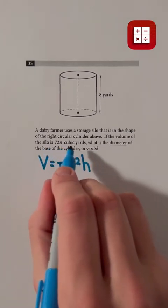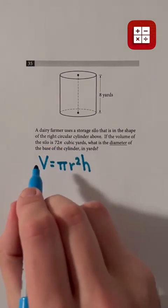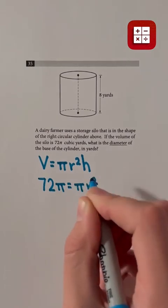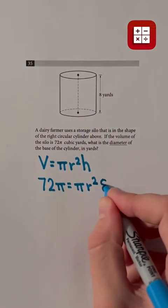We know 72π cubic yards is the volume, so let's substitute 72π for V and we also know that the height is 8 yards, so let's substitute 8 for h.